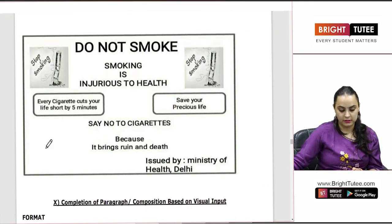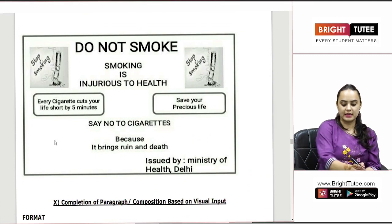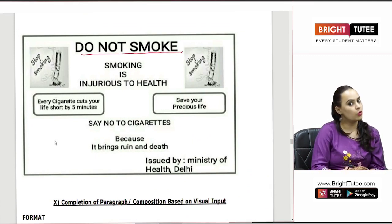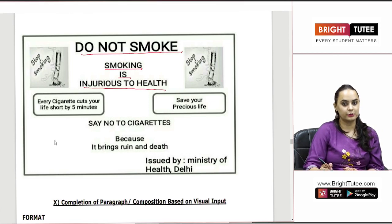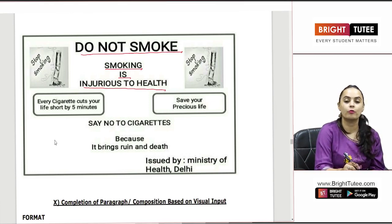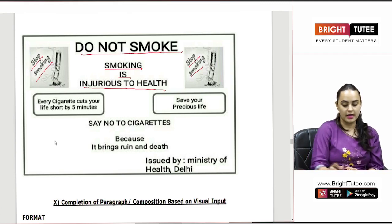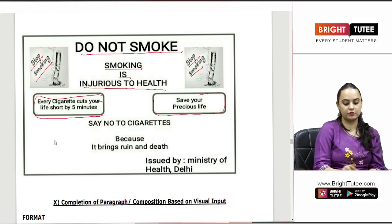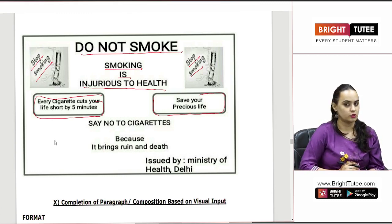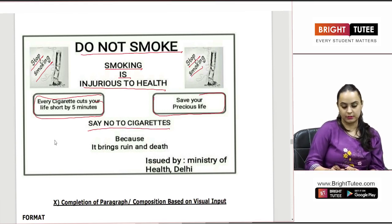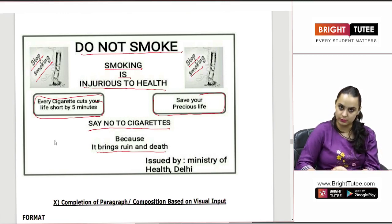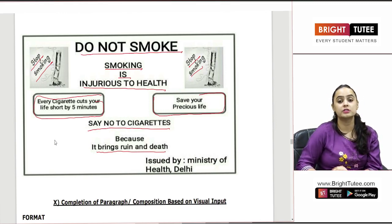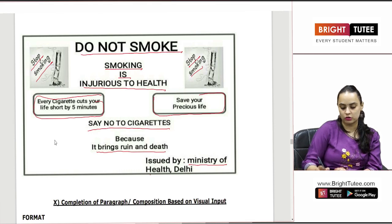Similarly, there is a poster for non-smoking — a rectangular poster. 'Do not smoke. Smoking is injurious to health.' In a small square box they have shown the picture of a cigarette and written 'Stop smoking.' In other boxes: 'Every cigarette cuts your life short by 5 minutes. Save your precious life. Say no to cigarettes because it brings ruin and death.' Everything important has been conveyed, and at the end the name of the issuing authority — the Ministry of Health — is written.